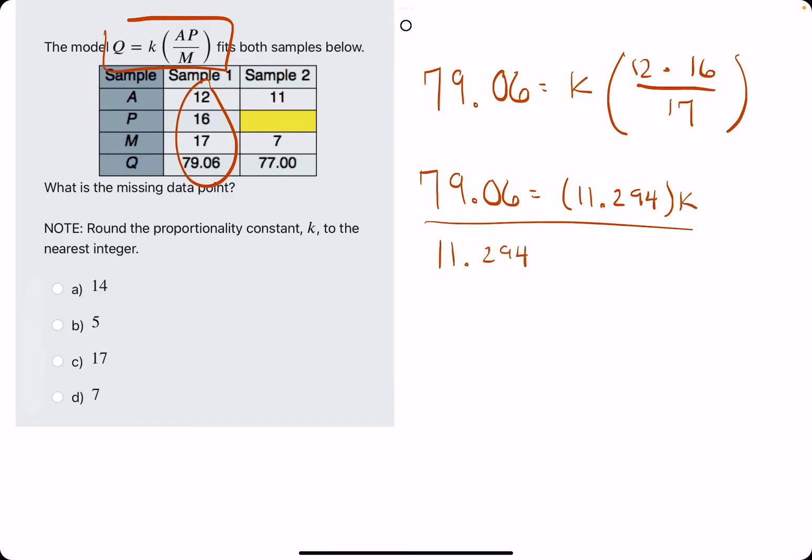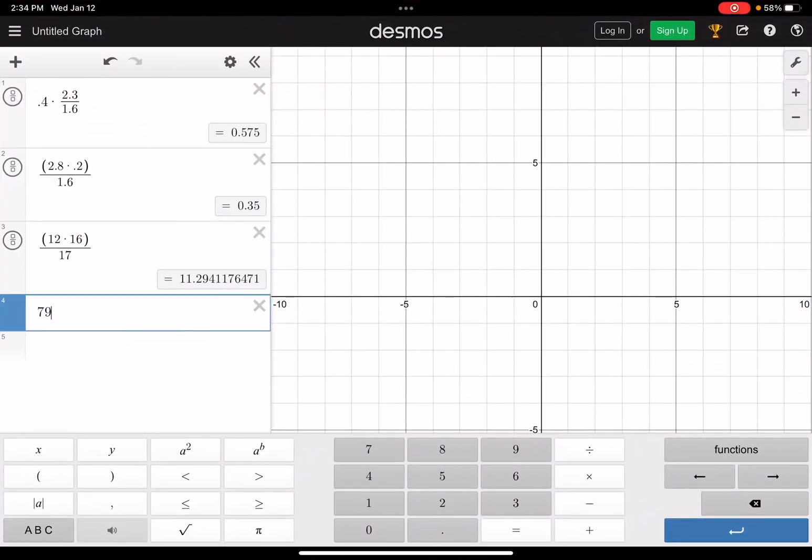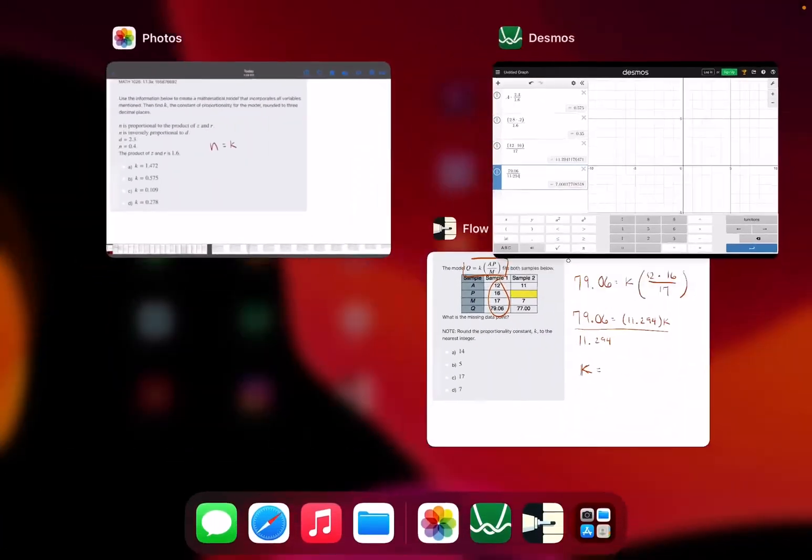So our K value will be 79.06 all divided by 11.294, and we get approximately 7, 7.000.